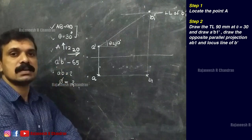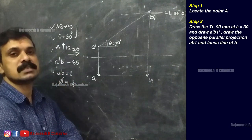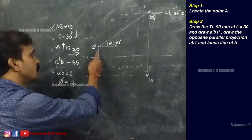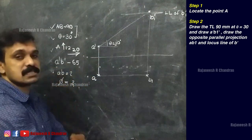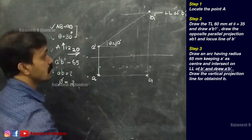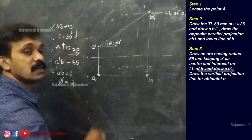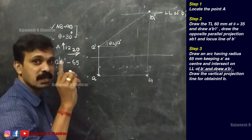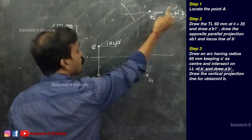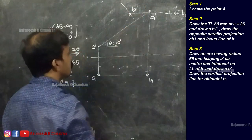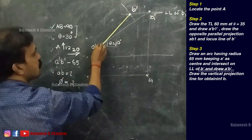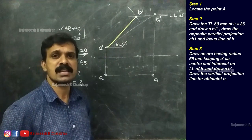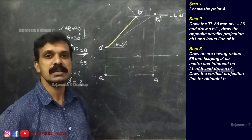The remaining data is that A dash B dash equals 65 mm. This is A dash, and the locus line of B dash is already drawn, meaning that line will contain B dash. Keeping A dash as center and a radius of 65, we can intersect an arc on the locus line of B dash to obtain B dash. Connect A dash with B dash to obtain the front view of the line AB.